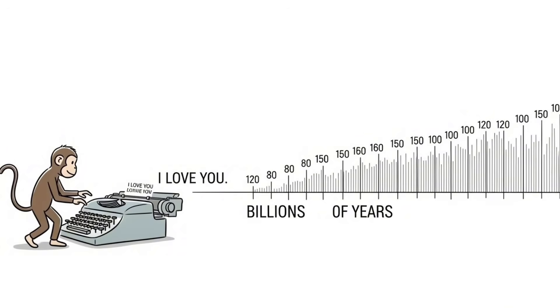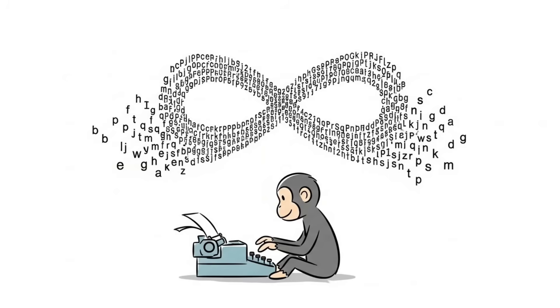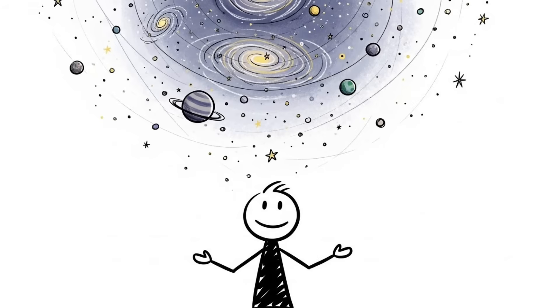With a 50-key typewriter hitting 95% accuracy for one specific sentence would take billions of years. But without the constraint and limitations of time, it guarantees that every possible finite string of text will eventually appear. Randomness over eternity doesn't just allow for order, it demands it.